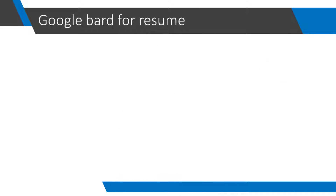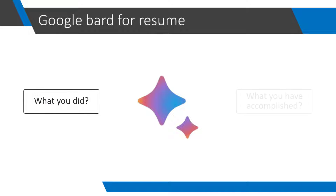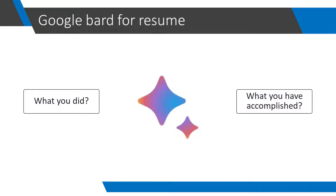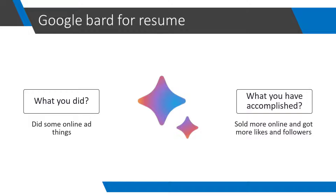To make your resume points, Bard needs two things: what you did and what you accomplished by doing that thing. So this information we will feed in our prompt and ask Bard to give us this in a resume format. Even if I have given this information in a very crude format — let's say what I did: 'did some online ad things,' and what we accomplished: 'sold more online and got more likes and follows.' If the user has created a CV point like this, that would not have good impact.